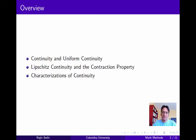We'll start off with some definitions: first continuity and uniform continuity, and then we'll define Lipschitz continuity, which is important in the theory of differential equations. We'll show that the contraction property is a special case of Lipschitz continuity. We'll end the segment by looking at a couple of different definitions of continuity and show they're all equivalent, including a definition based on the inverse images of open sets and a definition based on the convergence of sequences.